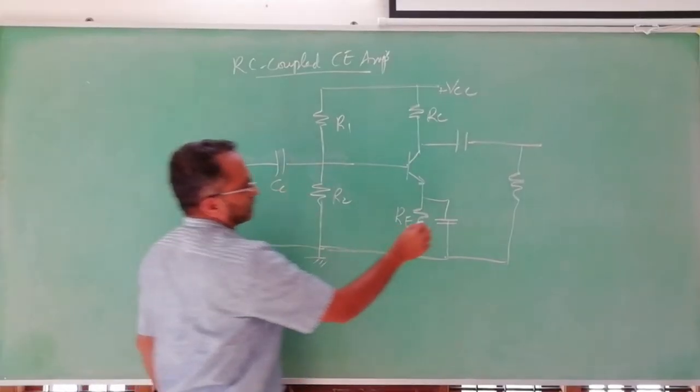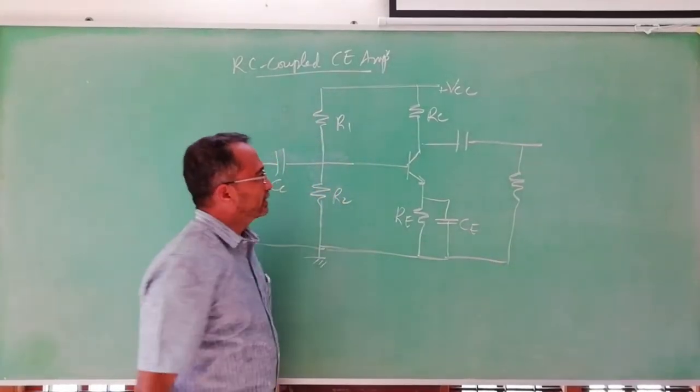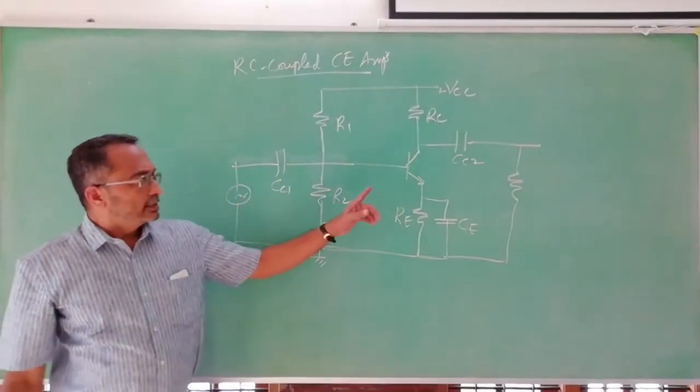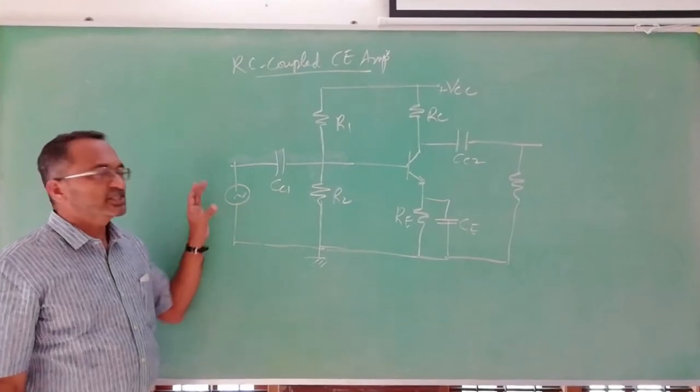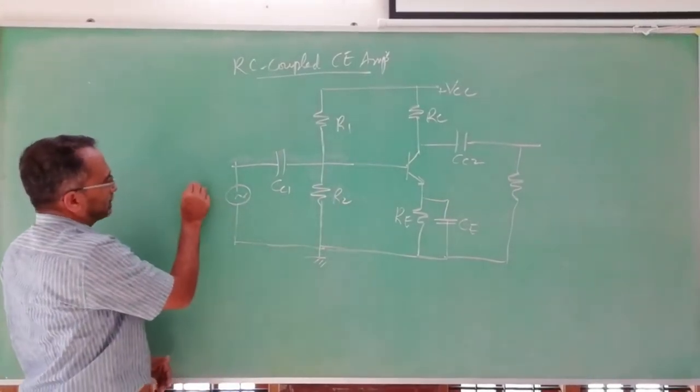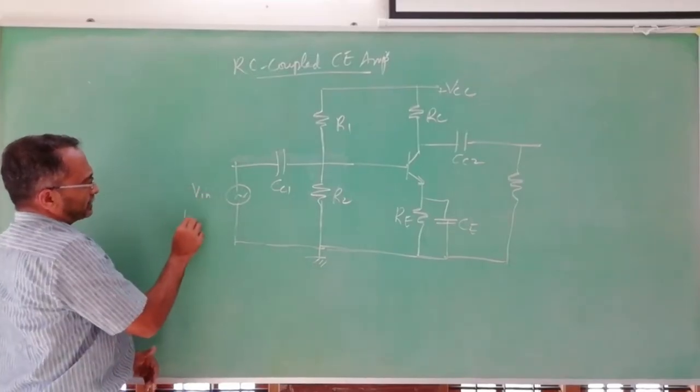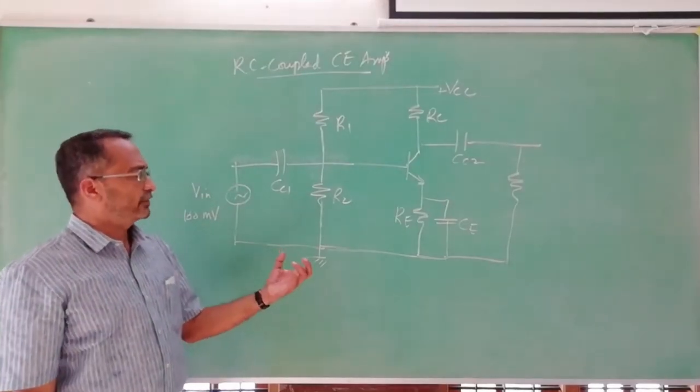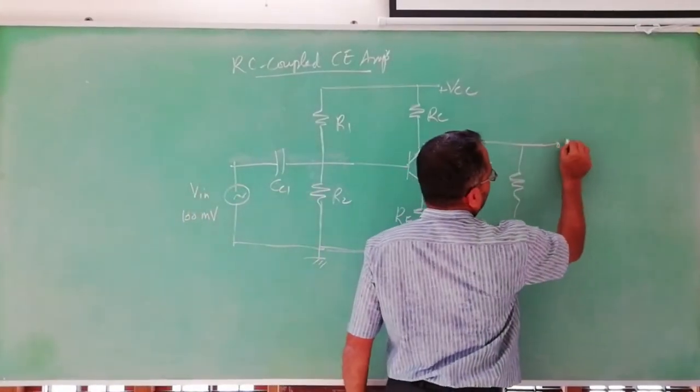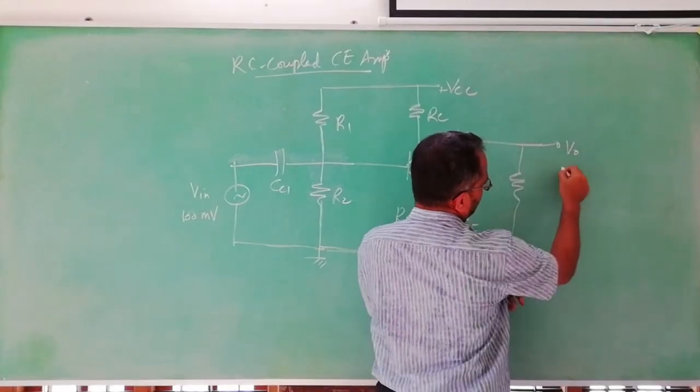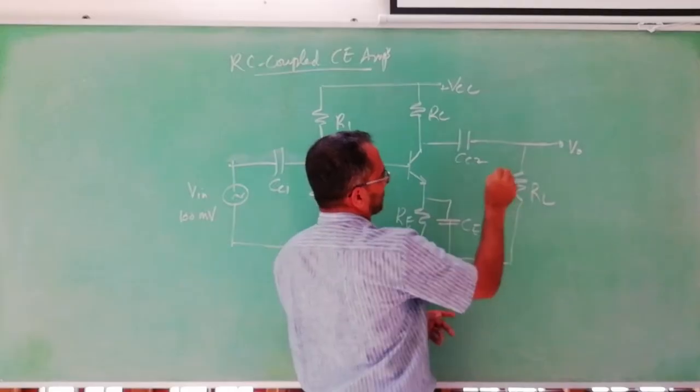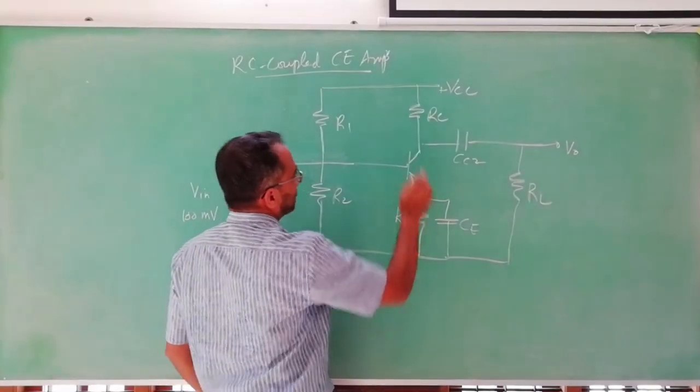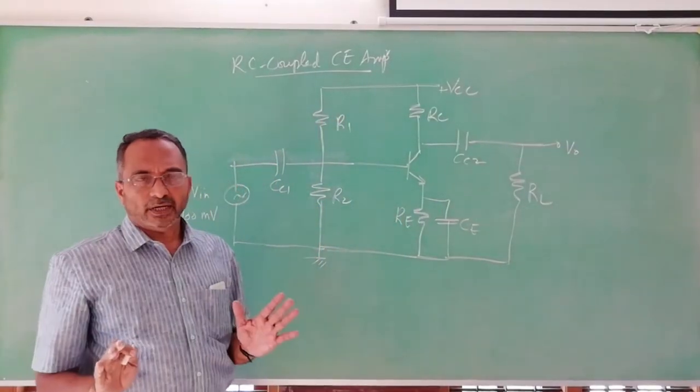Here we have 5 resistors and 3 capacitors. Here this is the input signal that is to be amplified by this amplifier, we shall call it VIN, let it be about 100 millivolt because low signal amplifier. The output taken from here we call it VO from here with respect to this earth and the output load resistance is RC. Coupling capacitors are CC2 and CC1, both are of same value, this is bypass capacitor.